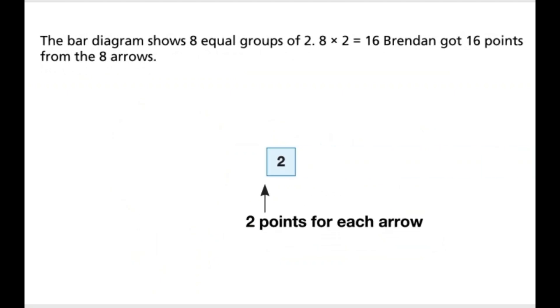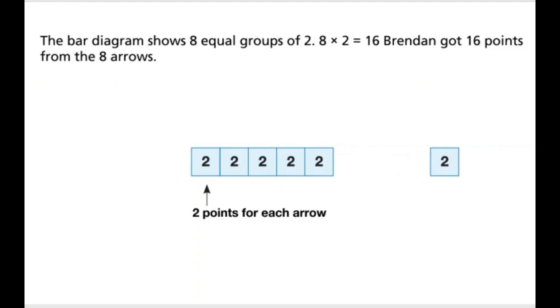The bar diagram shows 8 equal groups of 2. 8 times 2 equals 16. Brendan got 16 points from the 8 arrows.